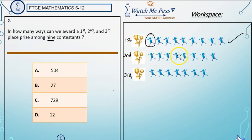So we have one, two, three, four, five, six, seven, eight. So eight people have a chance at winning the second place prize.